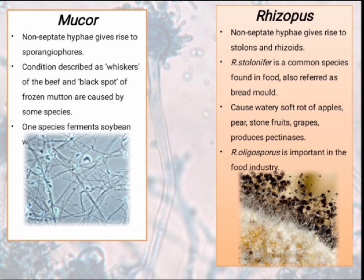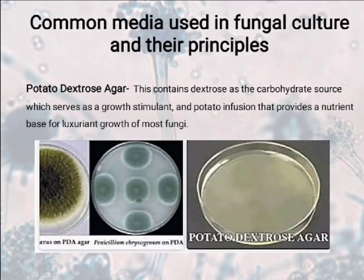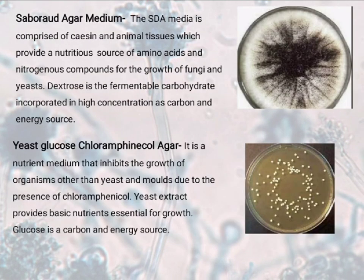Let us talk about some common media used in fungal culture and their principles. The first medium is Potato Dextrose Agar. This contains the sugar dextrose as the carbohydrate source which serves as a growth stimulant, and potato infusion that provides a nutrient base for lush growth of most fungi. The other medium is Sabouraud Agar, i.e., the SDA medium. It is comprised of casein and animal tissues which provide a nutritious source of amino acids and nitrogenous compounds for the growth of fungi and yeast. Dextrose is a fermentable carbohydrate incorporated in high concentration as a carbon and energy source.